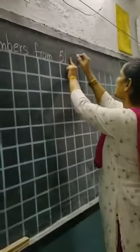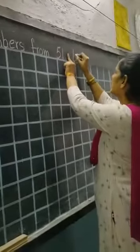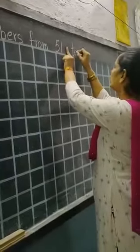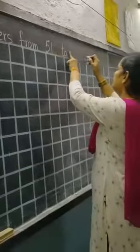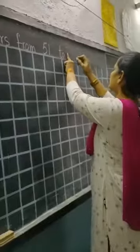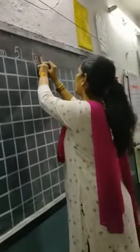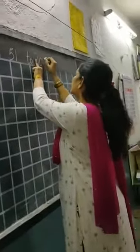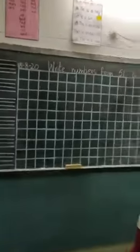Finger space, T, more, 2. Okay, put your finger, leave space and write 1, 0, 0 — 100. So today we will write 51 to 100.